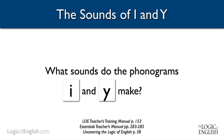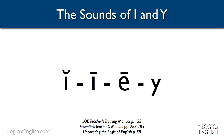Let's now talk about the phonograms I and Y. What sounds do I and Y make? That's right, they make the sounds I, I, E, and Y. They share all of these sounds. So let's talk about when each one will say these sounds.